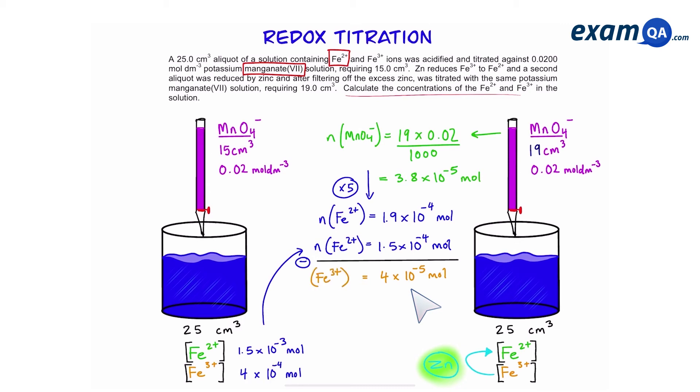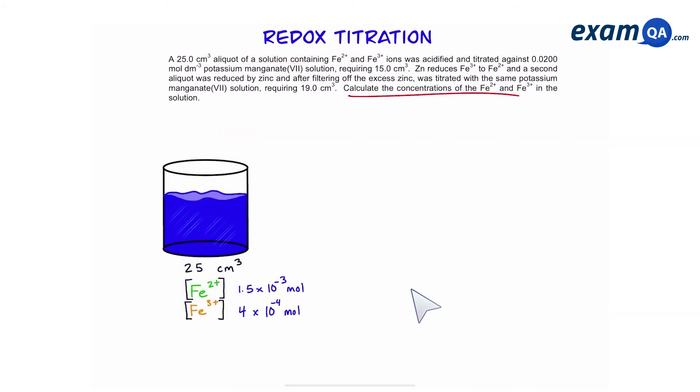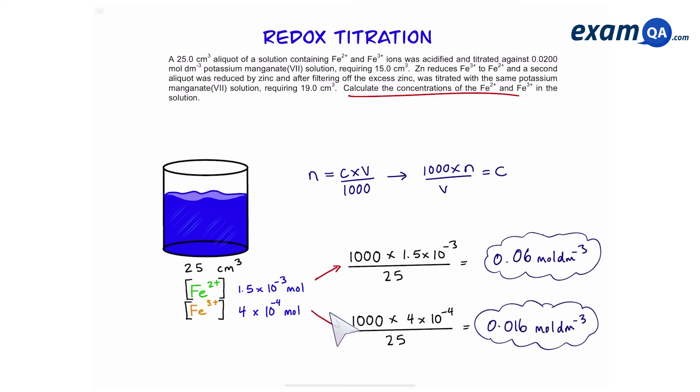Now that we know the moles of iron 2 plus and 3 plus in the solution, let's work out their concentration. To work out concentration, we're going to use the formula number of moles equals concentration times volume over 1000. We're then going to simply rearrange it and work out concentration. If I apply that to both of these ions, I should get the final answer of 0.06 for iron 2 plus and 0.016 for iron 3 plus.